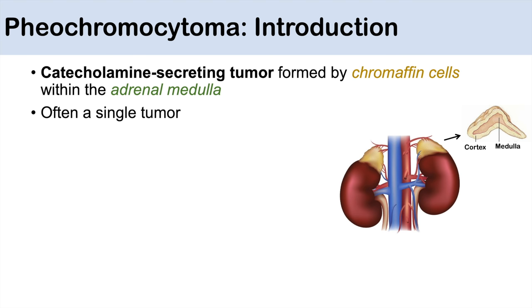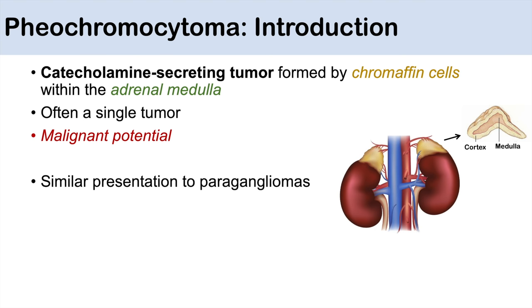This is often a single tumor, and these tumors also have malignant potential — about 10% of pheochromocytomas are found to be malignant. You also have a similar presentation to paragangliomas, which originate from sympathetic nervous tissue, as opposed to pheochromocytomas which originate from chromaffin cells, but the management and treatment are similar for both conditions.